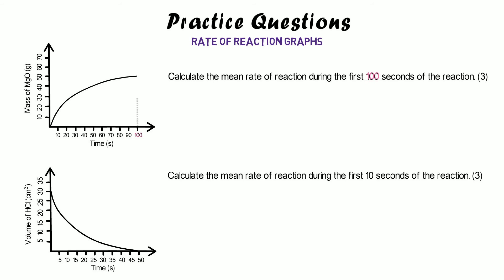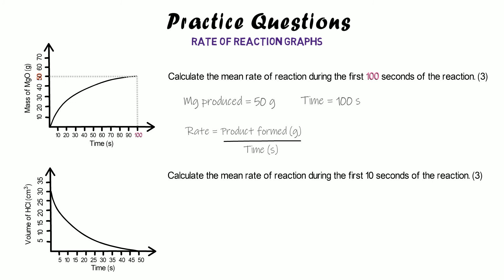For the first graph question, we find 100 seconds, read up and across, and find that 50 grams of magnesium has been produced. So: product formed divided by time equals 50 divided by 100 equals 0.5 grams per second. You get one mark for reading the graph, one for the process, and one for the final answer.